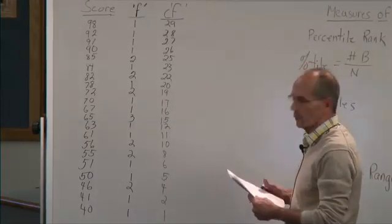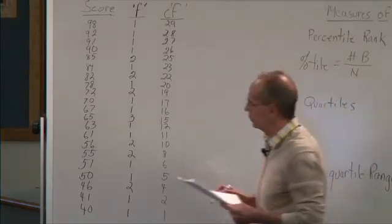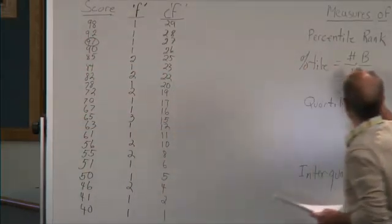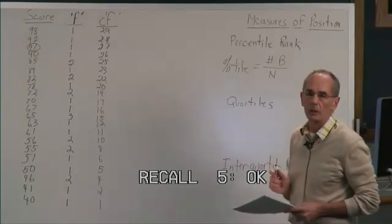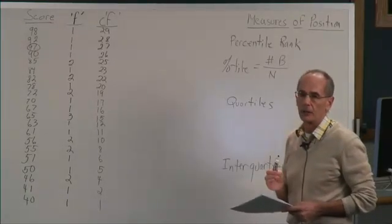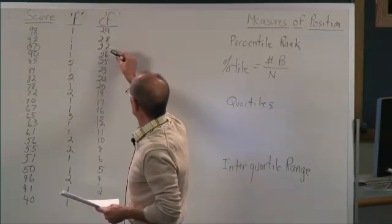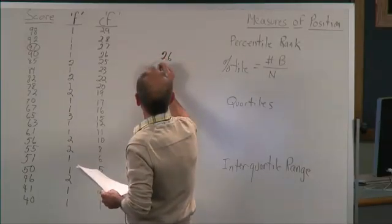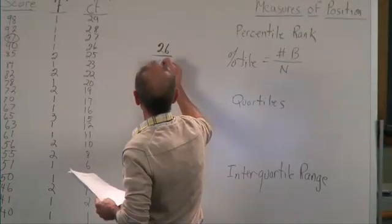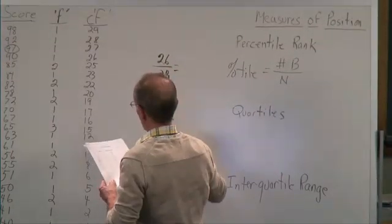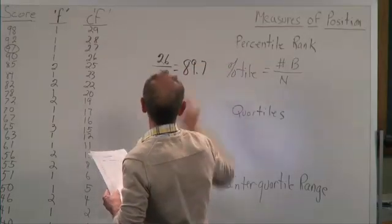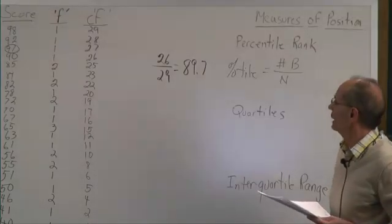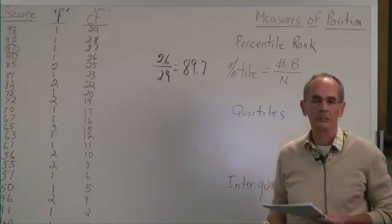Let's say we wanted to determine the percentile rank of someone who scored a 91. The formula tells us to count the number of scores below 91 and divide that by the total number of scores. Below 91, there are 26 scores. Dividing 26 by 29, we get a percentile rank of 89.7. That means someone who scores a 91 is doing better than 89.7% of that group.